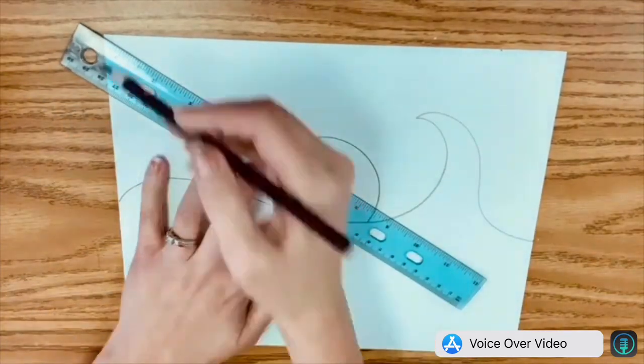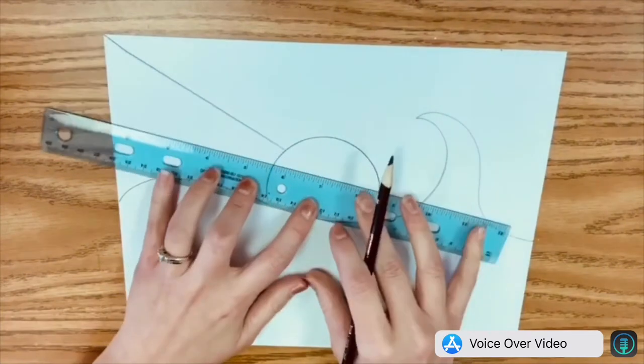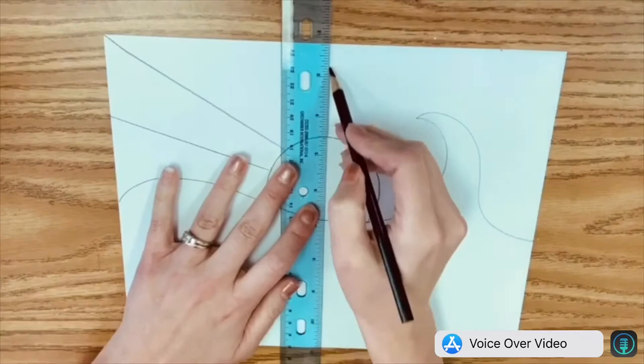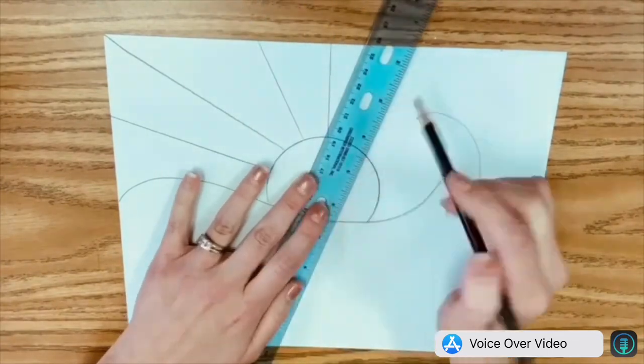And then find something that is straight. It can be the edge of a book, can be a ruler, whatever. Line it up with the center of the sun and then move it around to create the rays of your sun.